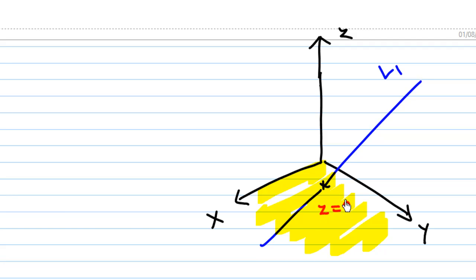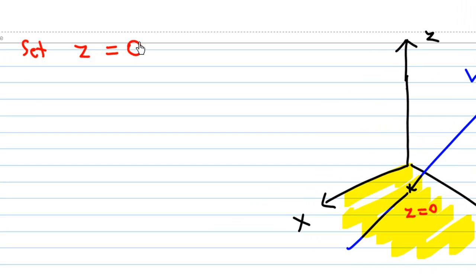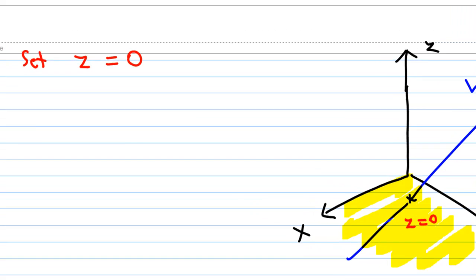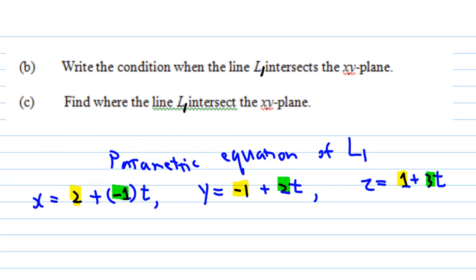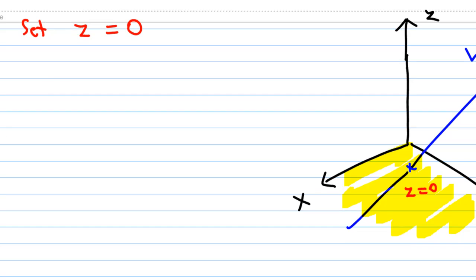So in order to find when the line L1 intersects the xy-plane, you set z = 0. We know that the equation of the line L1 is z = 1 + 3t, so we get 1 + 3t = 0, and then you get t = -1/3.